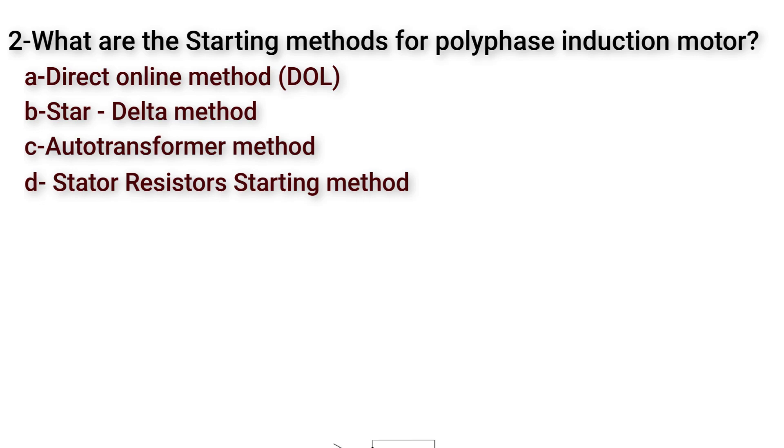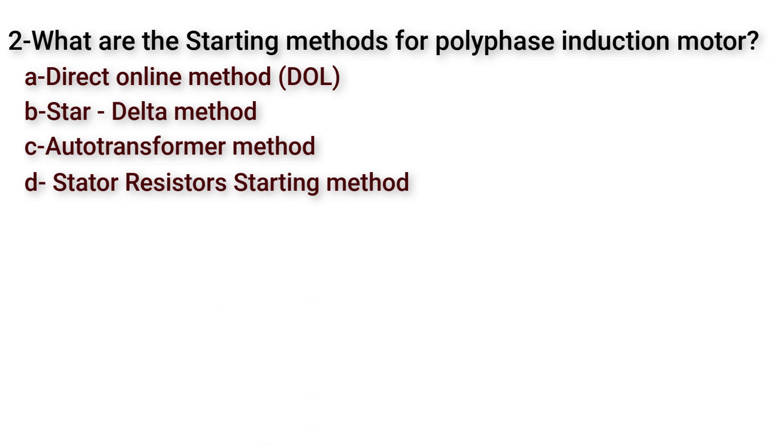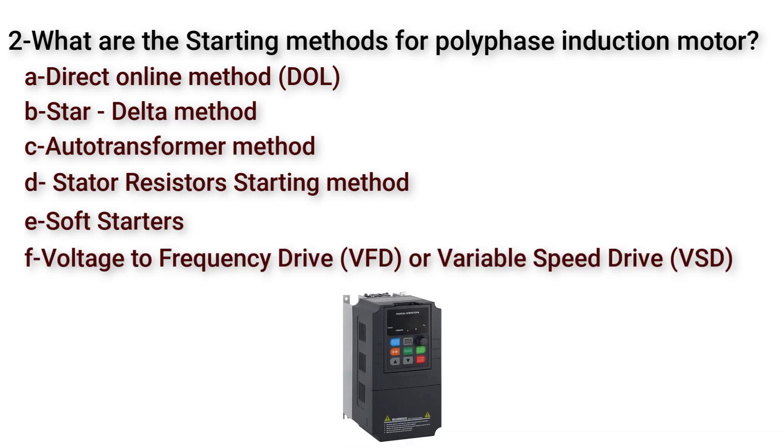Another method is stator resistor starting method. Here we connect resistors to stator windings to reduce the voltage applied on the stator. Then we will disconnect these resistors. Also we have soft starters which is an electronic device that reduces the voltage across the stator at starting. At last we have voltage to frequency drive or variable speed drive. Here we use electronic device which converts the three-phase applied voltage into DC. Then it will convert it again into three-phase AC variable voltage and variable frequency waveform.